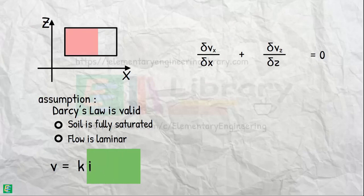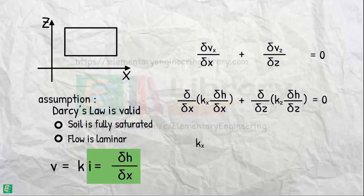Hydraulic gradient across this element is given as this. Substituting it into the continuity equation and solving it, we get this.